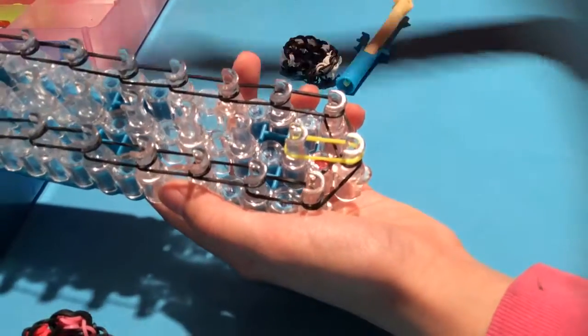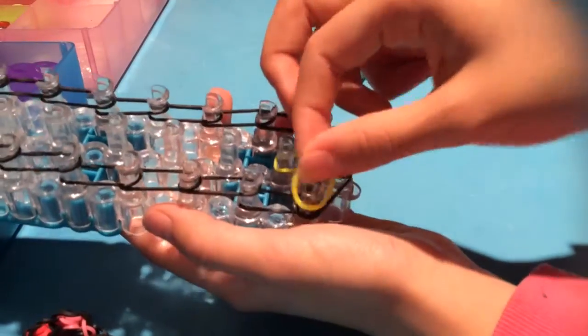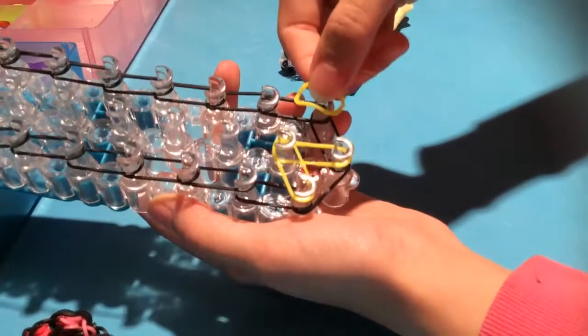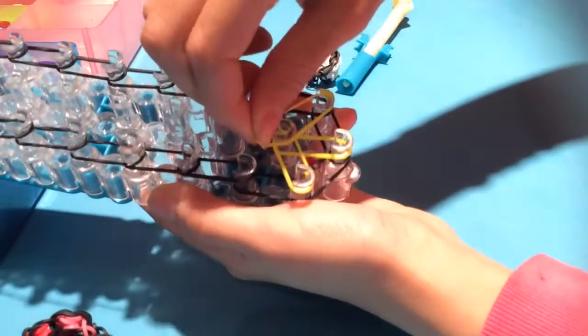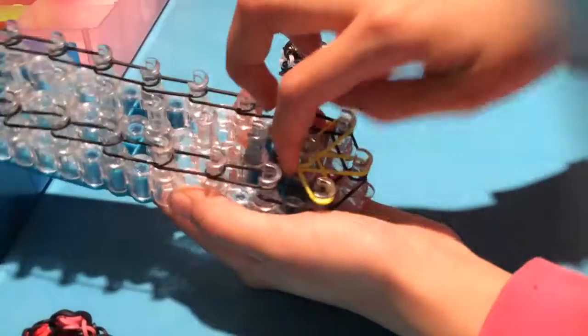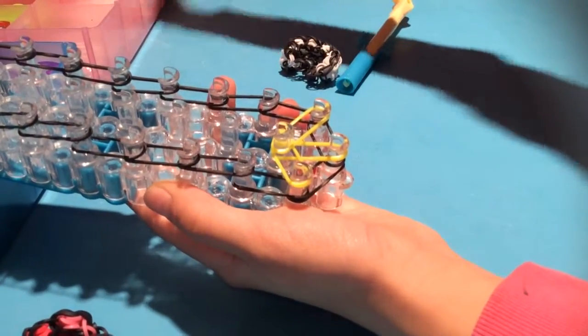Now you take another yellow and place it like this. Basically, you're just making an arrow. So now you take another yellow.